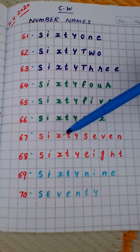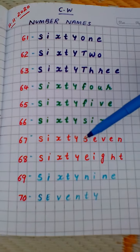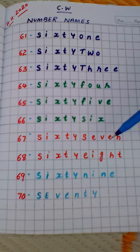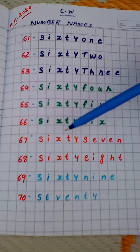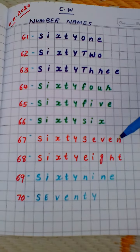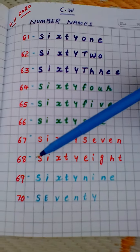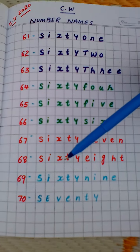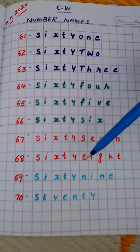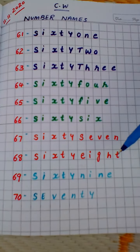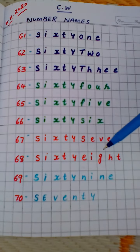67. S-I-X-T-Y, sixty. S-E-V-E-N, seven. S-I-X-T-Y, sixty. E-I-G-H-T, eight. 68.